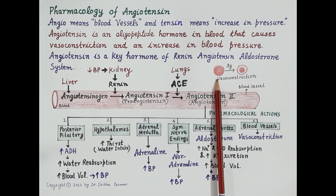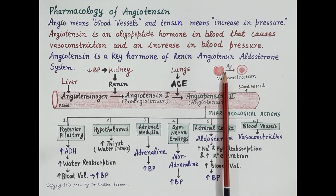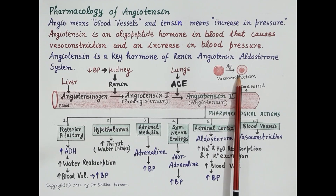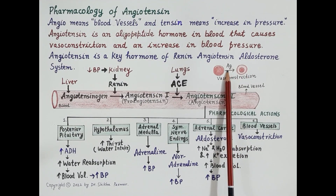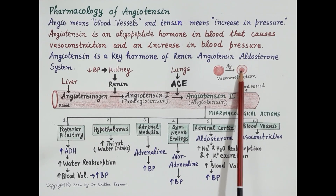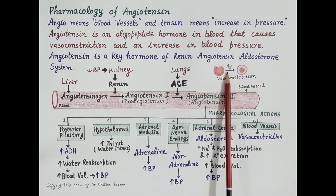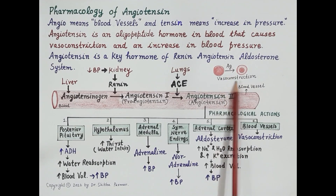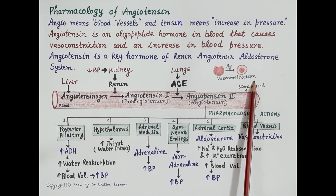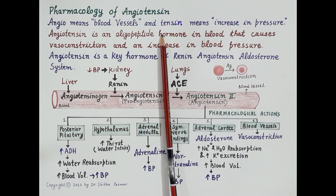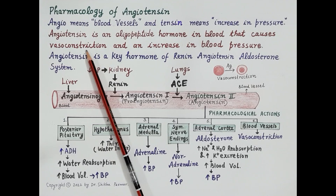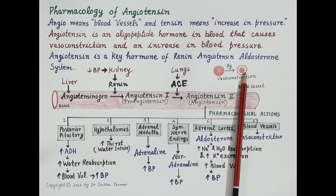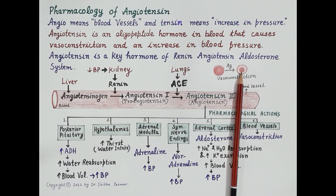Looking at this figure of a normal blood vessel, angiotensin constricts the blood vessel by contracting the smooth muscles found in the wall of the blood vessel. This reduces the lumen and effective diameter of the blood vessel — this is termed vasoconstriction. Angiotensin is an oligopeptide made up of eight amino acids that induces vasoconstriction, thereby causing a rise in blood pressure.